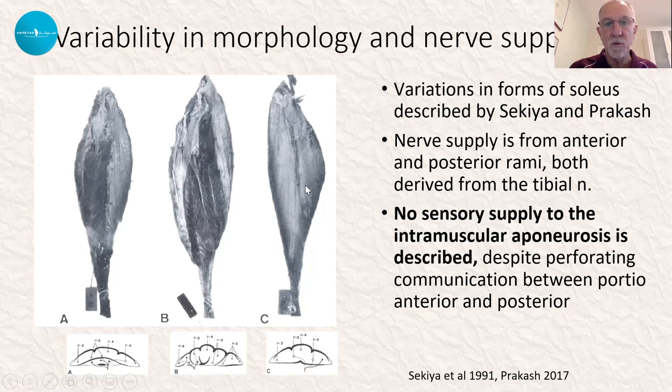There are occasions where we see people with two bipennate structures, or others who don't have any bipennate structures at all. This is, in fact, an earlier form of the muscle where it hadn't differentiated into this particular entity, and we do see these variants in athletes of the present day as well.